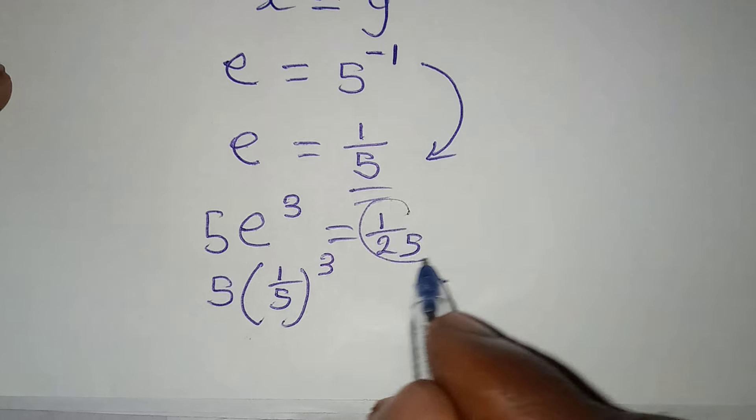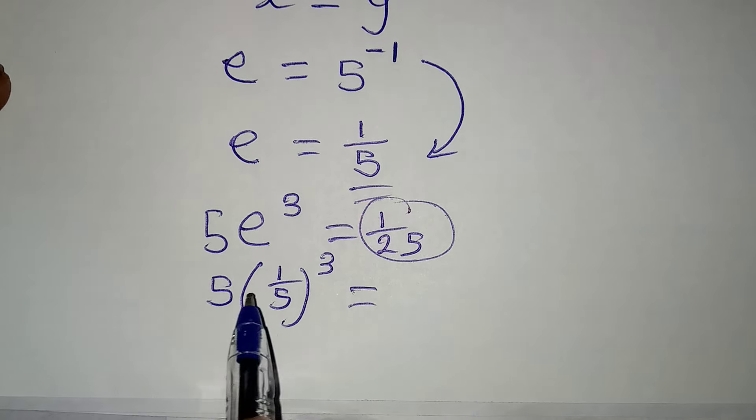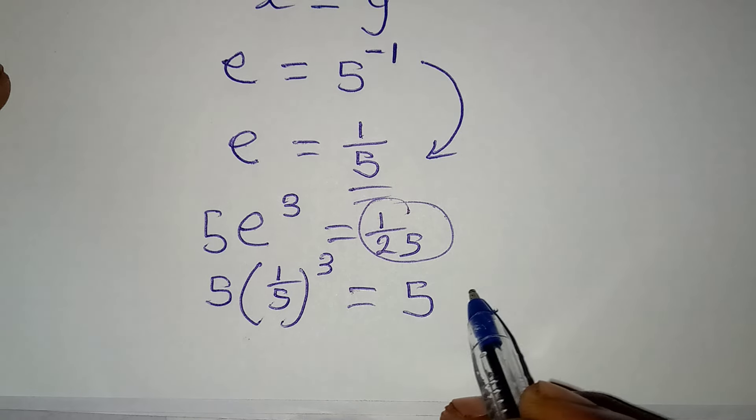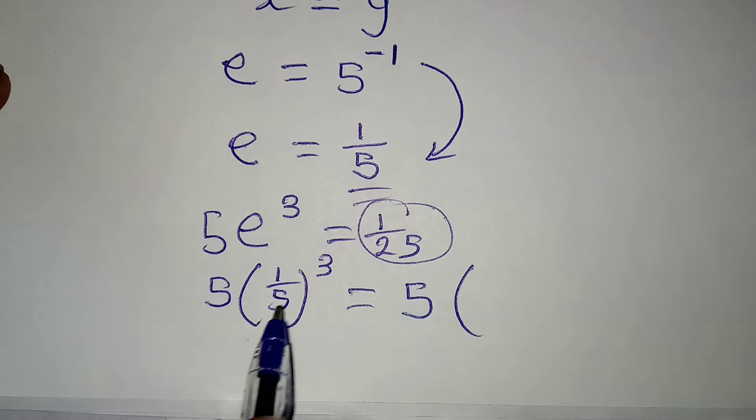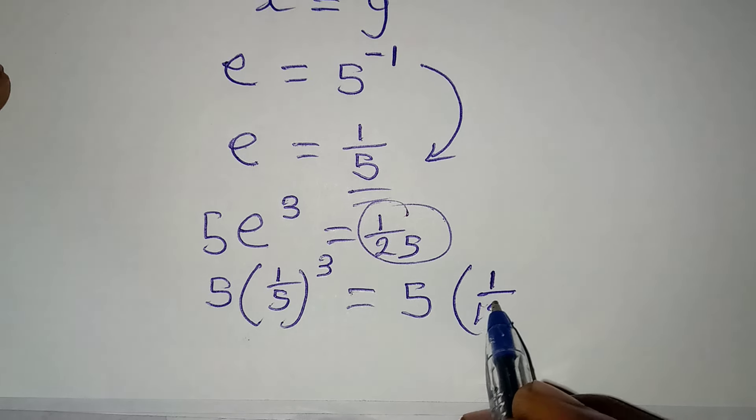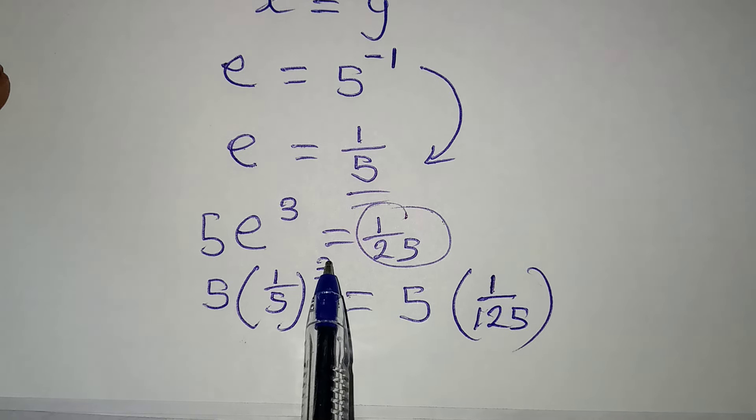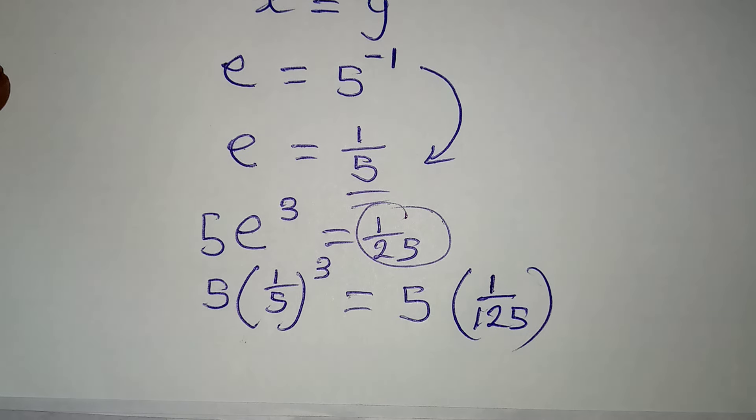Now, let me keep working this until I have 1 over 25. So now, this is the same thing as 5 into brackets. 1 over 5 in 3 places will give us 1 over 125 because 5 to the power of 3 is 5 times 5 times 5 and that will give us this.